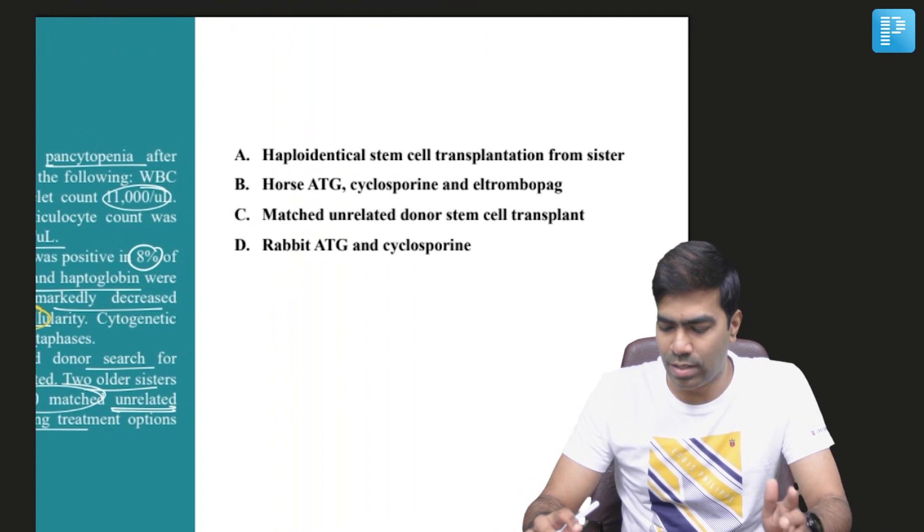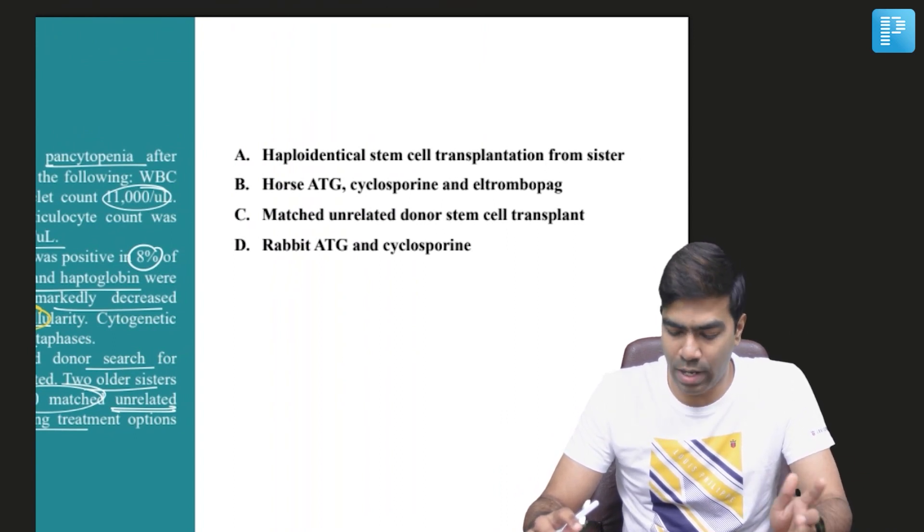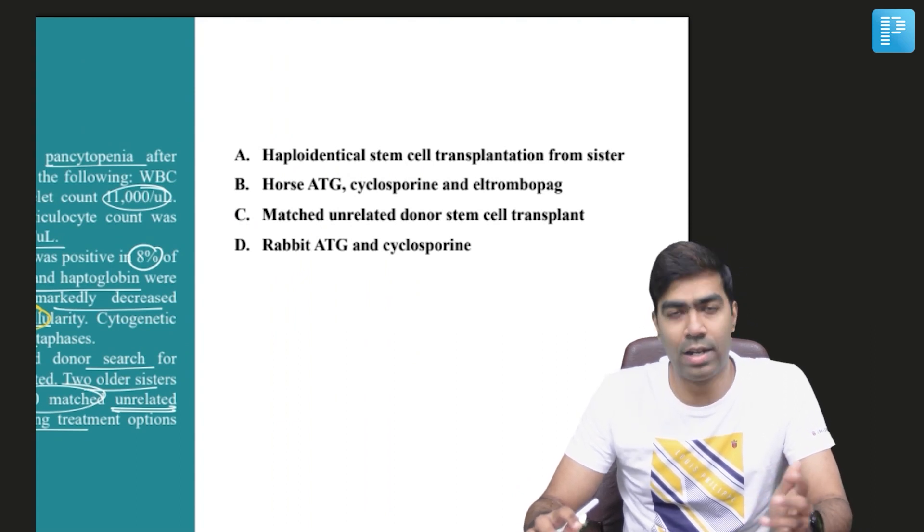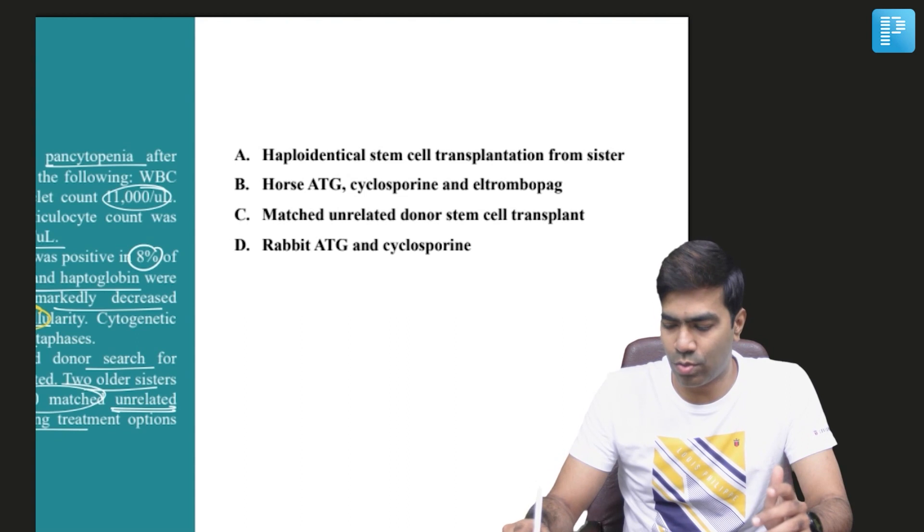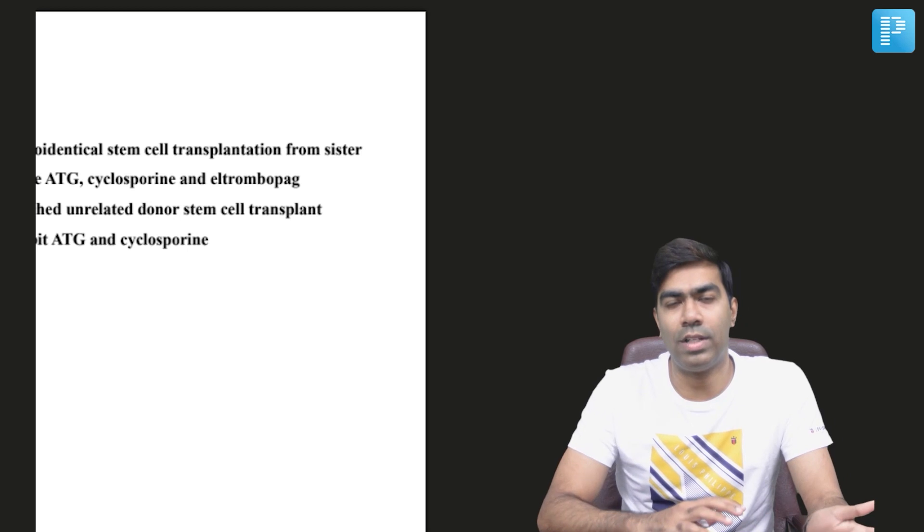Which of the following treatment options would you recommend? You will go for haploidentical stem cell transplantation from sister, or horse ATG, cyclosporine and eltrombopag, or matched unrelated donor stem cell transplant, or rabbit ATG and cyclosporine? So what would you do here? So even before going into the